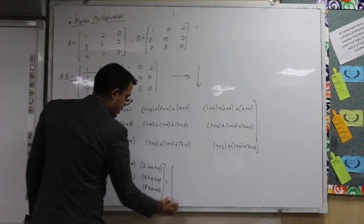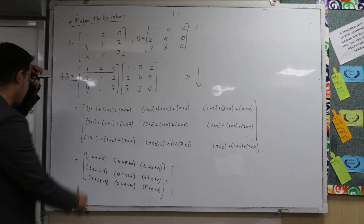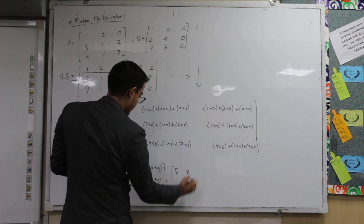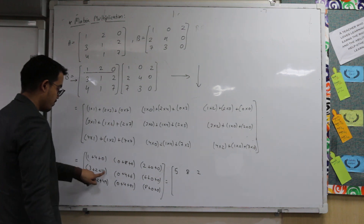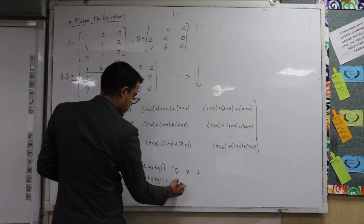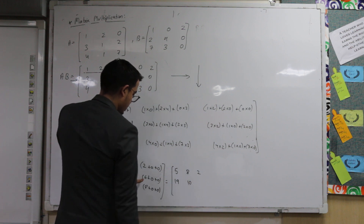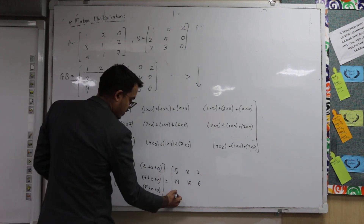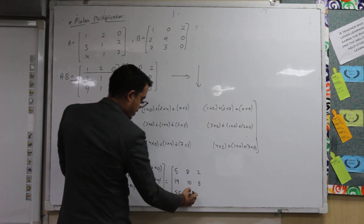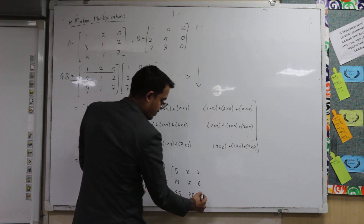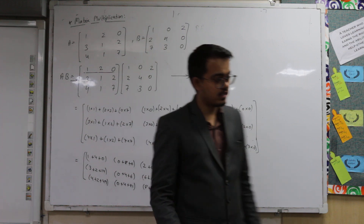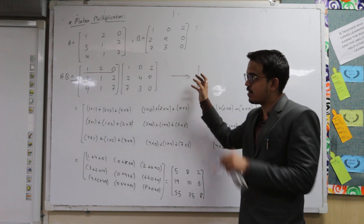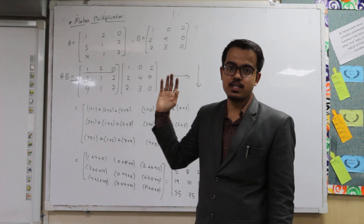So your answer for AB, when A and B are those 3×3 matrices, is: first row 5, 8, 2; second row 19, 10, 6; third row 55, 25, 8. This was all about multiplying a 3×3 matrix with another 3×3 matrix. We will start with exercise sums in the next video.